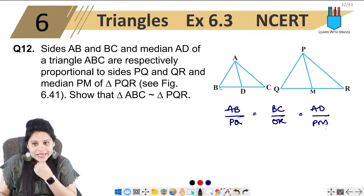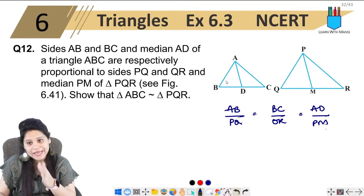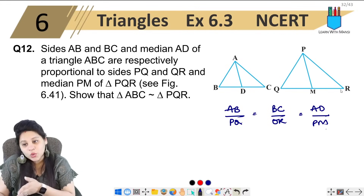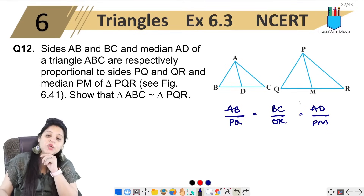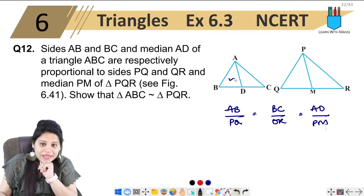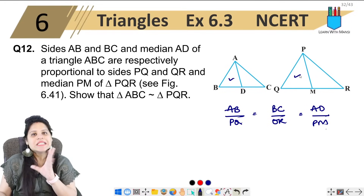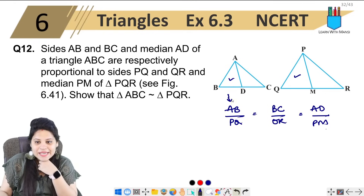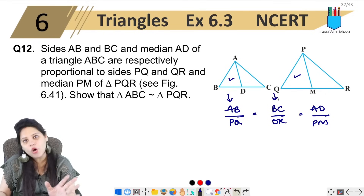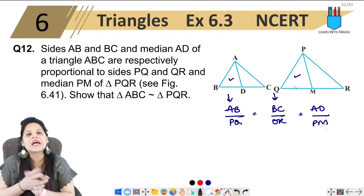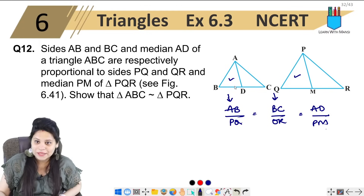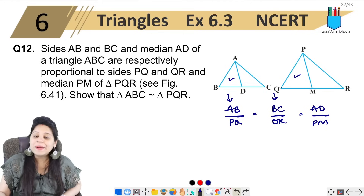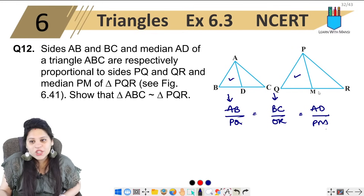Now what we have given in the question is AB upon PQ, and BC upon QR. If you had the third side, then the triangle similarity would follow directly. But they have given the median instead. So first I will prove these two smaller triangles similar. This side and this side are already from the big triangles. I will talk about AB upon PQ and BD upon QM.